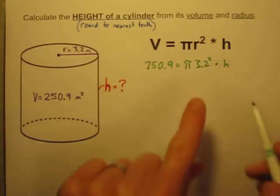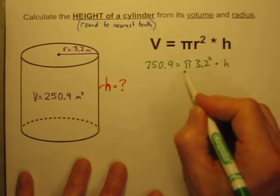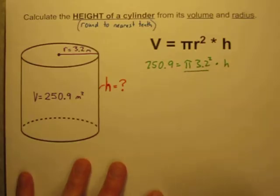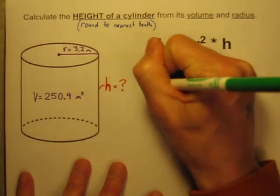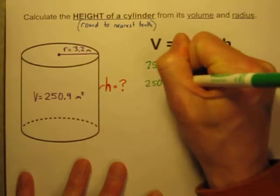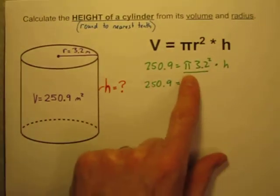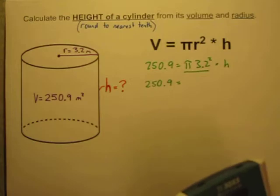I know everything else. The first step I'm going to take after putting the numbers in there is I'm going to multiply those two numbers together. So I'm going to still have 250.9 on the left hand side. Let's find what pi times 3.2 to the second power is.